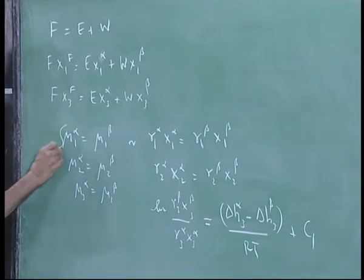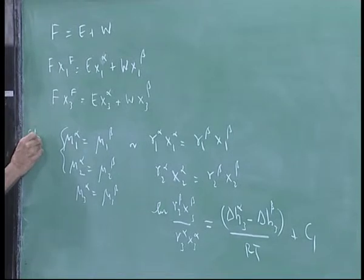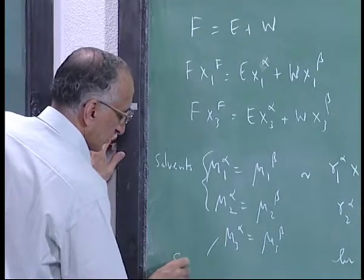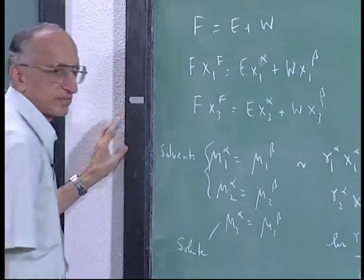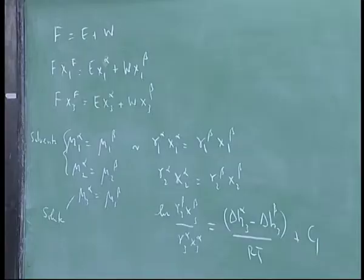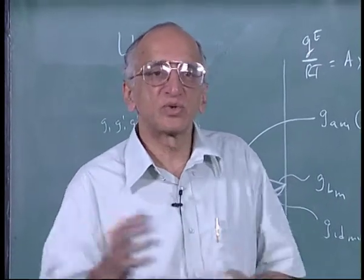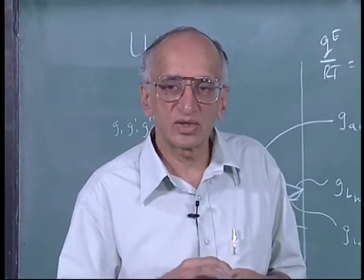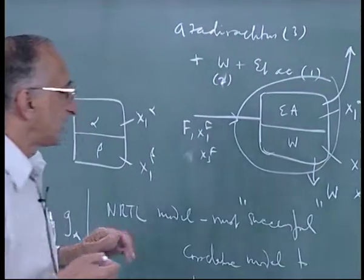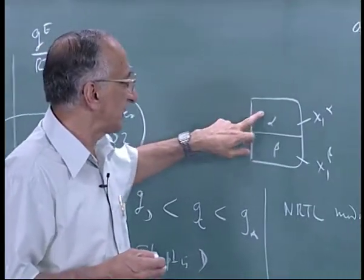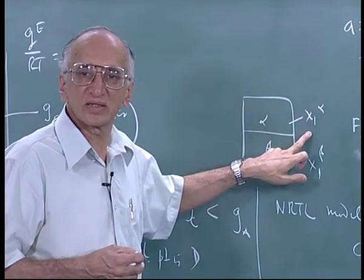It is you write the chemical potential models for the solute. Remember these two are solvents this is solute. The solute model will have mu 3 star so you divide by t and differentiate with respect to t you will get h3 bar. You recognize that when you rearrange the equation that h3 bar actually refers to is independent should be independent of composition so you will go to the limit as 3 goes to 0 so you will get an infinitely dilute solution.